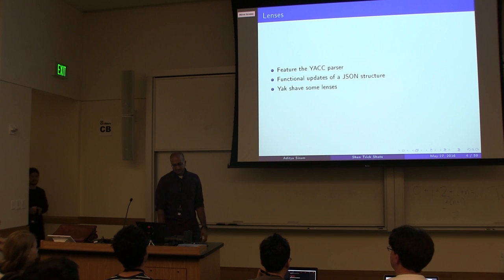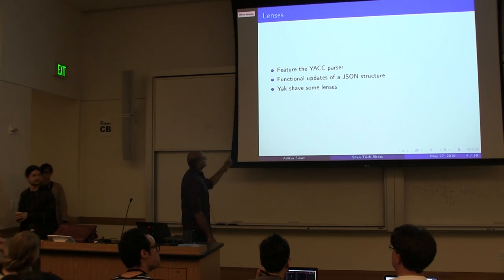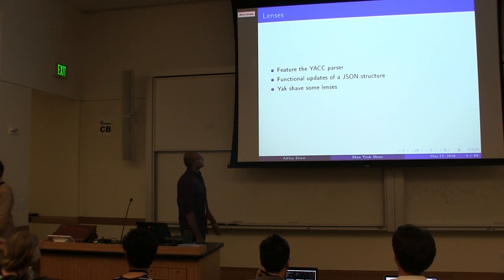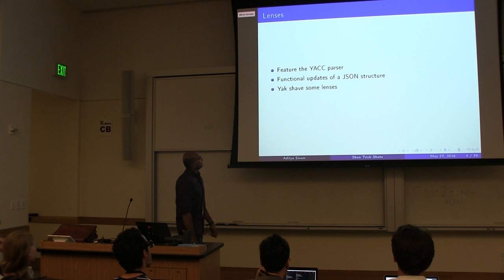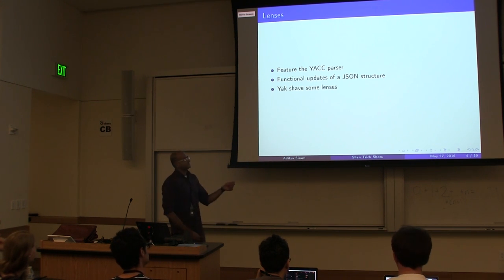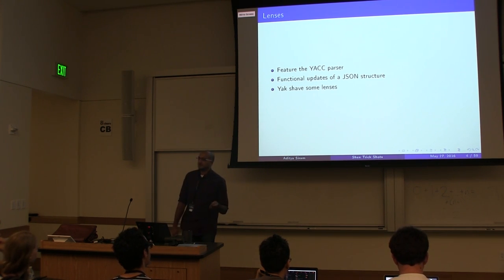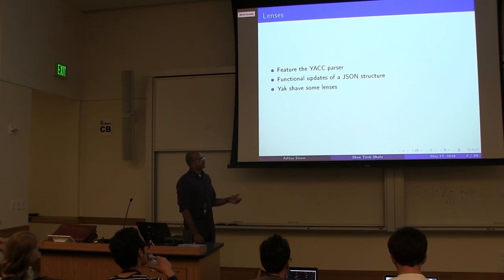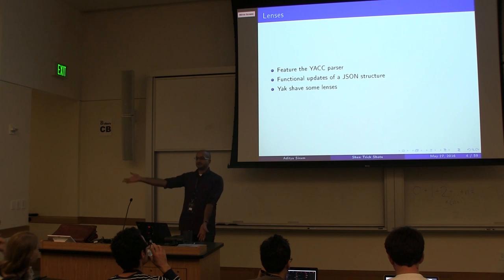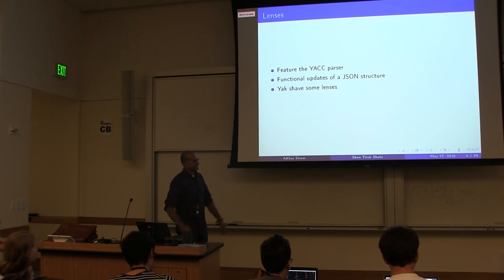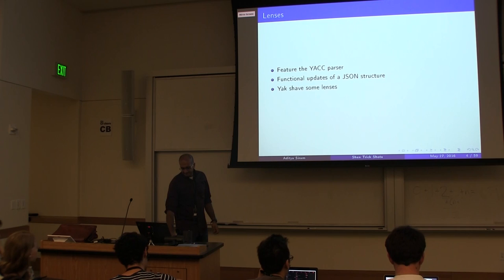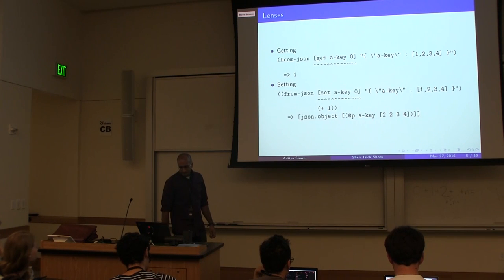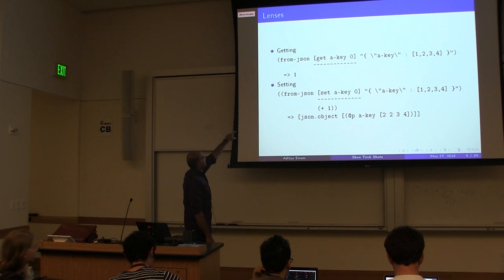The first example is going to feature that built-in grammar parser that Shen has, in the context of functional updates on a JSON structure. This is also going to talk about lenses. I hadn't meant to do that, but I needed lenses to update a deeply nested JSON structure.